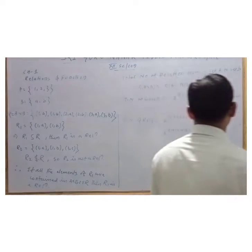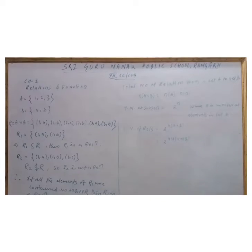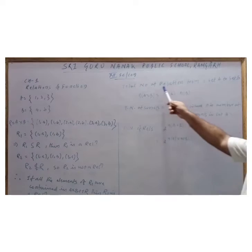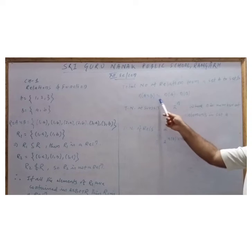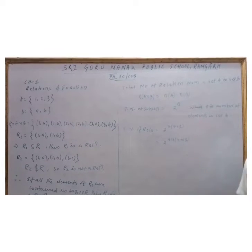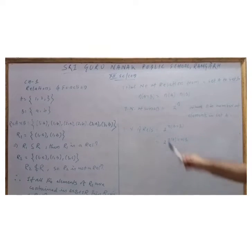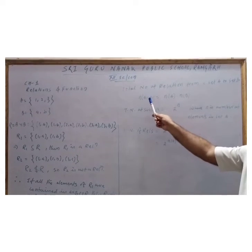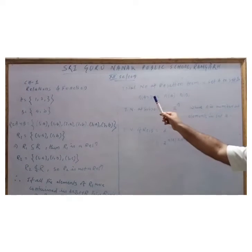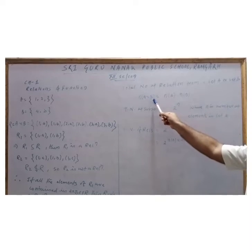Now come to this: total number of relations from set A to set B. Now n(A×B) = n(A) × n(B). This is called cardinal number of a finite set. A cross B is a set, so we can write n(A×B) = n(A) × n(B).